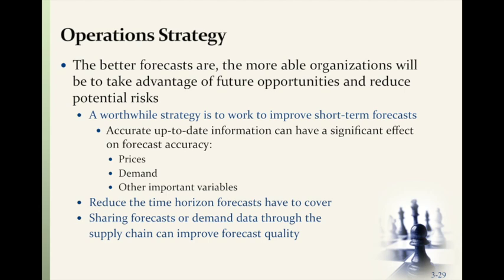The strategy is that the better the forecasts, the more able organizations will be to take advantage of future opportunities and reduce potential risks. A worthwhile strategy is to work to improve short-term forecasts. Accurate, up-to-date information on prices, demand, and other variables can have a significant effect on forecast accuracy. Reducing the time horizons that forecasts cover makes them more accurate. Sharing forecast or demand data through the supply chain can improve forecast quality — customers or suppliers can flag issues, giving you the opportunity to improve accuracy.